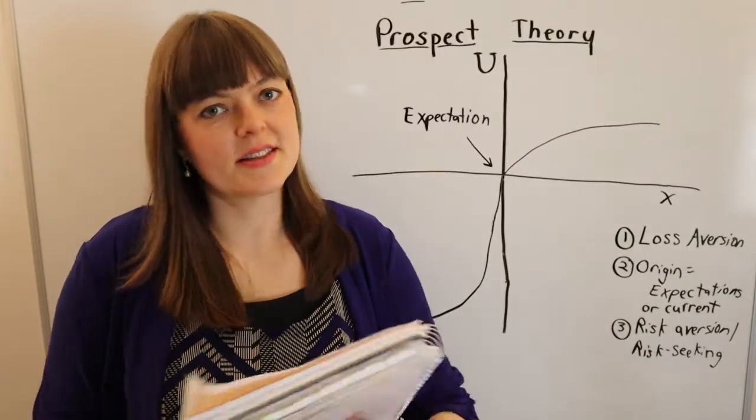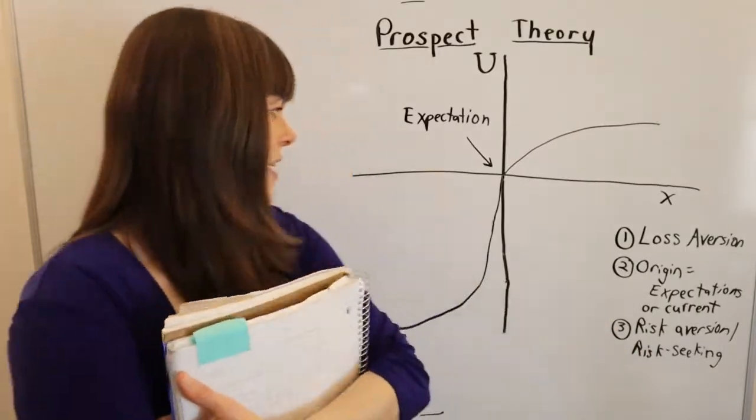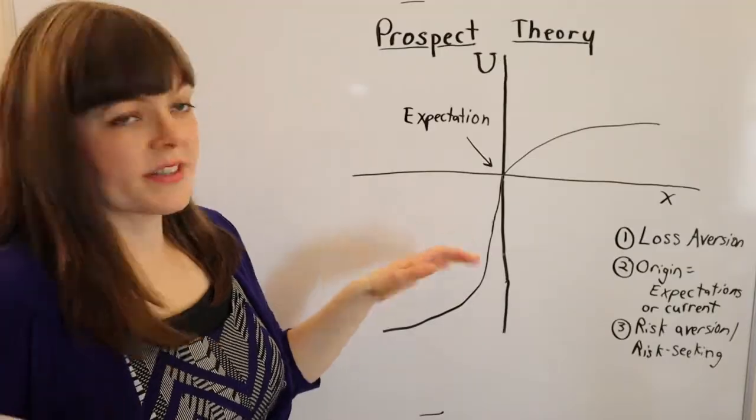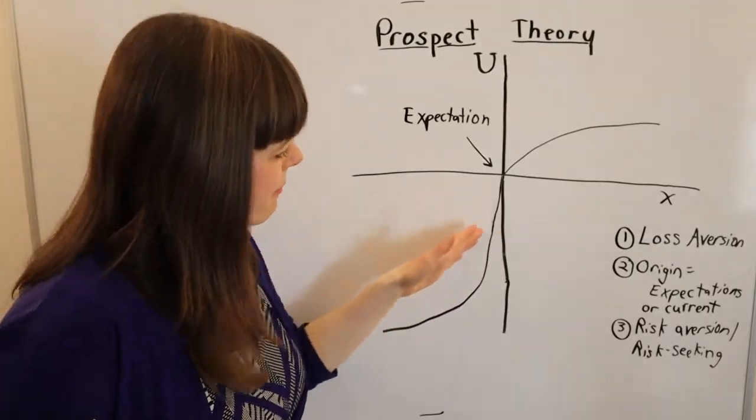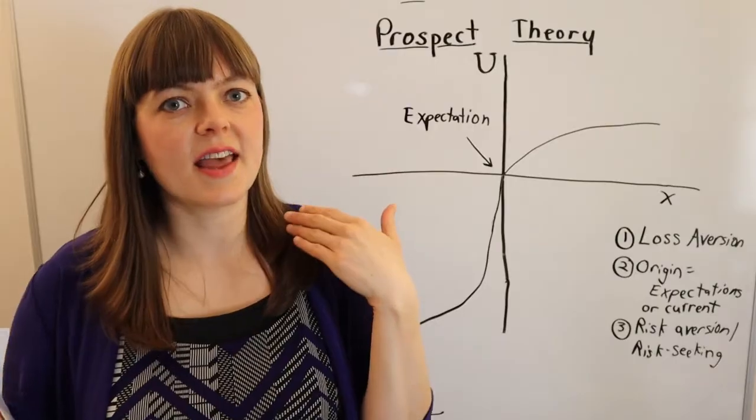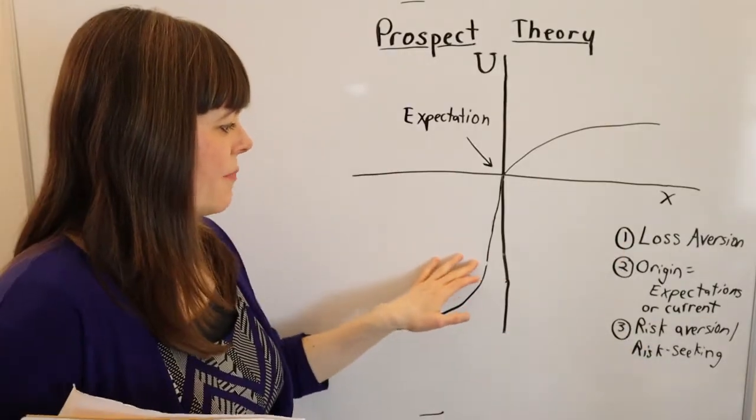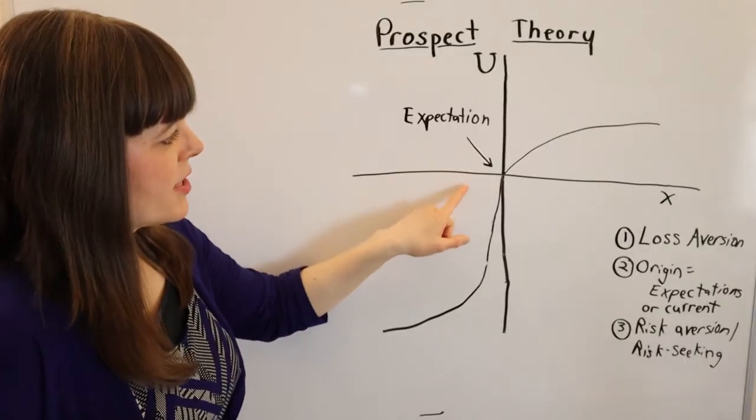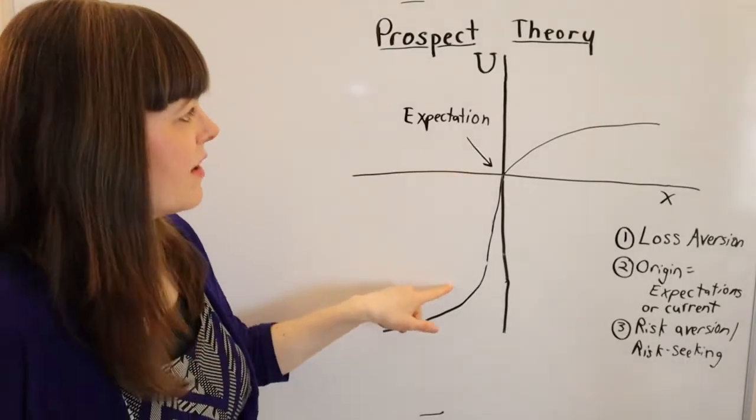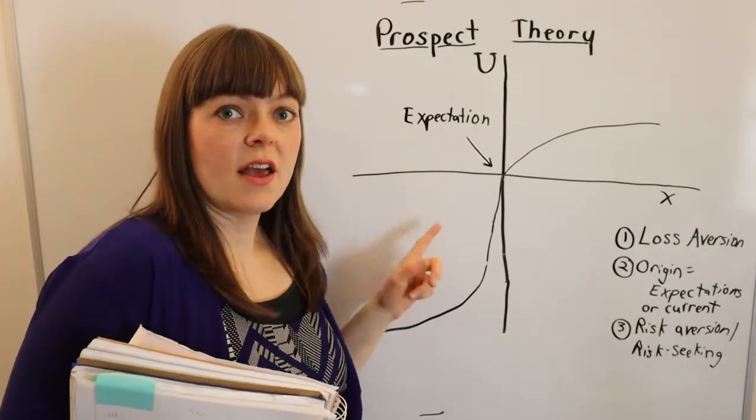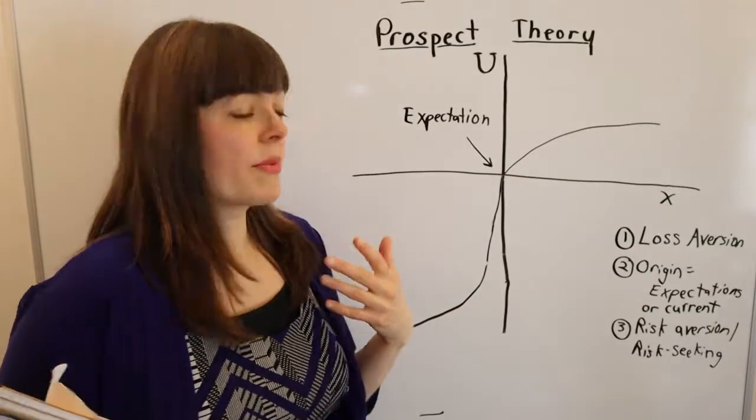And there's lots of ways that this is applied, lots of scenarios where this is applicable. One interesting application is when people feel like they're behind. So let's say they can never quite make their bills or they always feel behind their neighbors. Sometimes they may feel like they're in this quadrant,